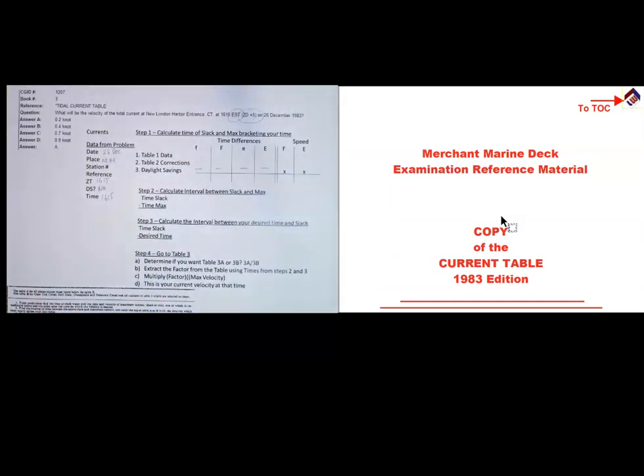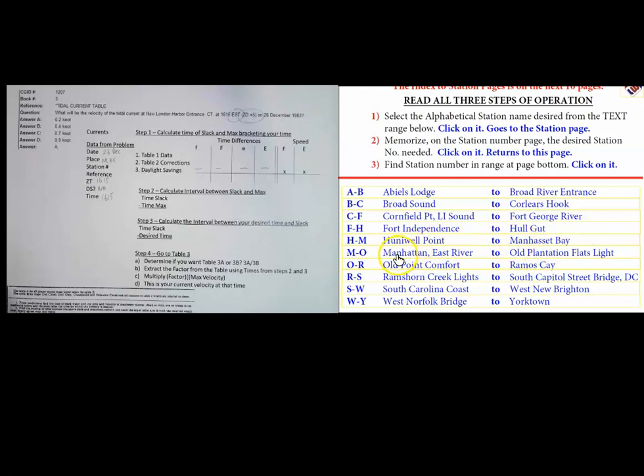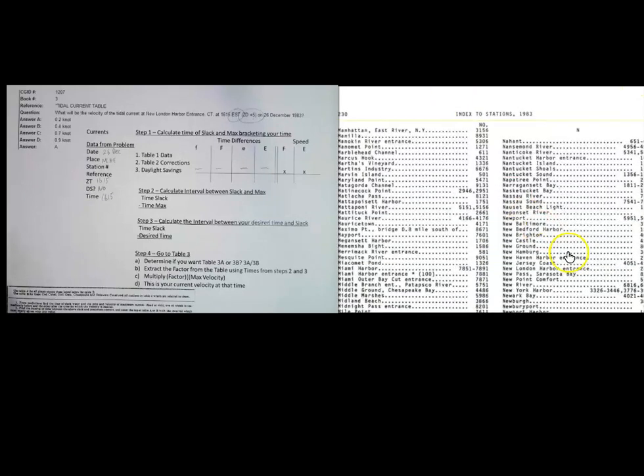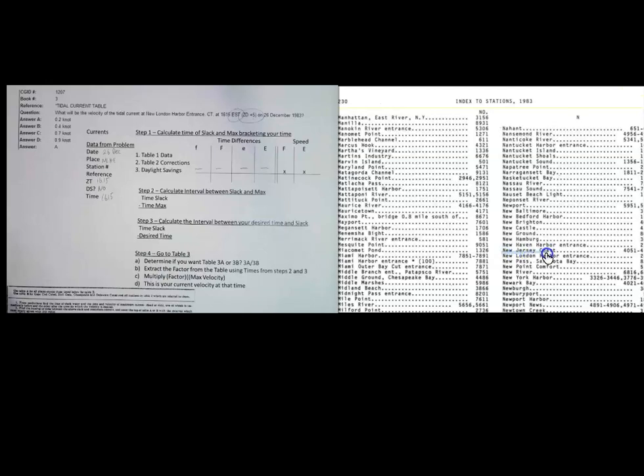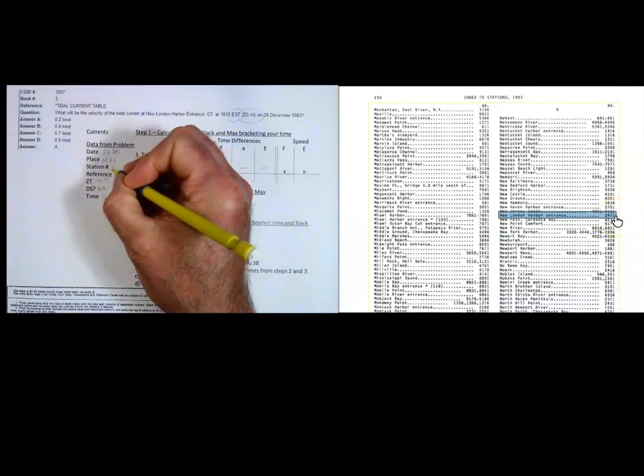What I'm going to do now is go to the index. Let me go to my book, and we're going to go to the index, which should be at the end. New London - let's see here. Here we go. New London Harbor Entrance. So we want New London Harbor Entrance. There it is right there. Let me just zoom in on that a little bit. New London Harbor Entrance right here, and our station is 2471. So I'm going to write that over here, 2471.